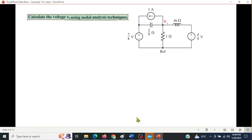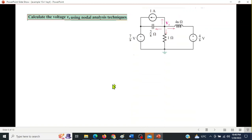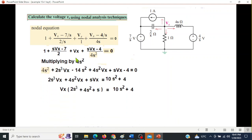Now we can write the nodal equation. Writing the nodal equation with current direction marked, all currents going out. Current going out: 1 plus current Vx minus 7 over s divided by 2s, plus Vx minus 4 over s divided by 4s equals 0. Simplifying the nodal equation by multiplying by LCM and further simplifying, we can evaluate Vx.